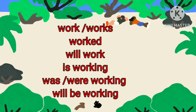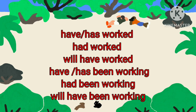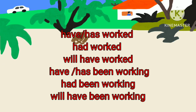Work, worked, will work. Is working, was working, will be working. Have worked or has worked, had worked, will have worked. Has been working or have been working, had been working, will have been working. Likewise, a finite verb can express 12 tenses.